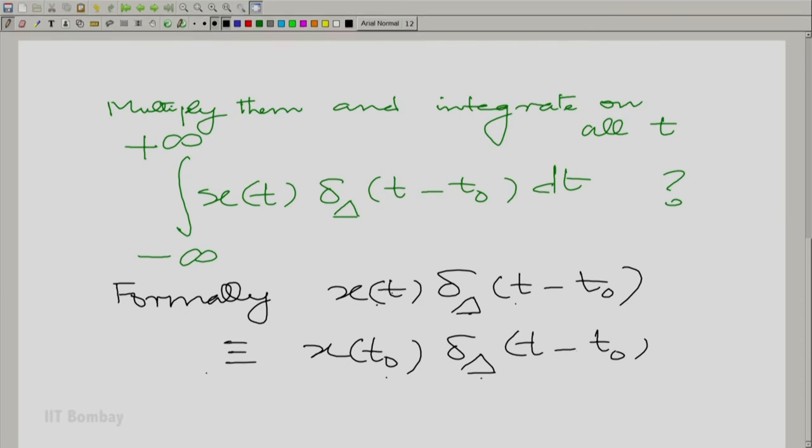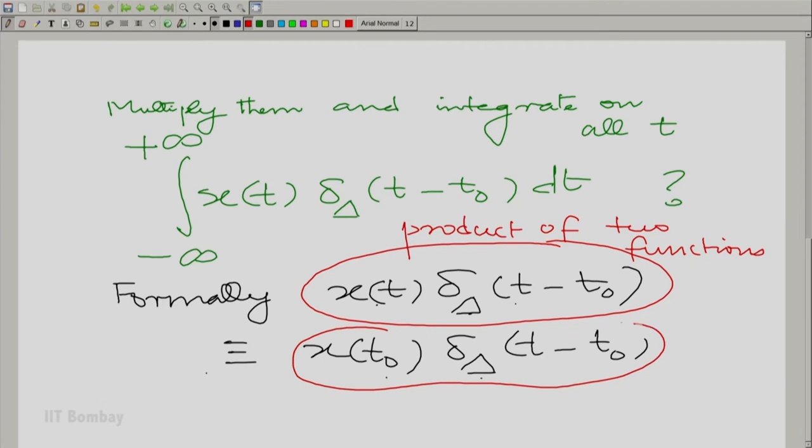The two sides of the equation have a very different meaning. Here, you have a product of two functions and here you have a multiple of the pulse. So what we are saying is in the region where the function is continuous, the product of xt with that narrow pulse is just a multiple of that narrow pulse.